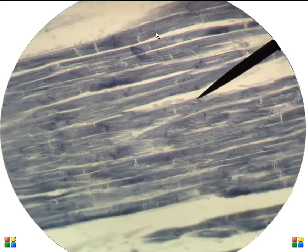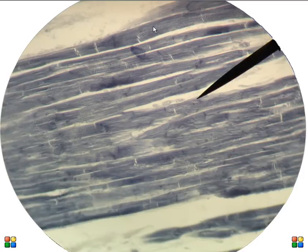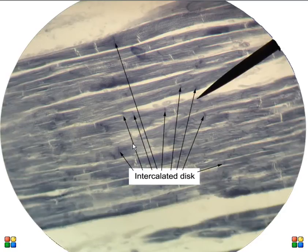You can also see the striations in cardiac muscle. The striations are created by those sarcomeres that we talked about on the molecular level when we talked about skeletal muscle especially. Another intercalated disc here — let me click over to the picture that's labeled.